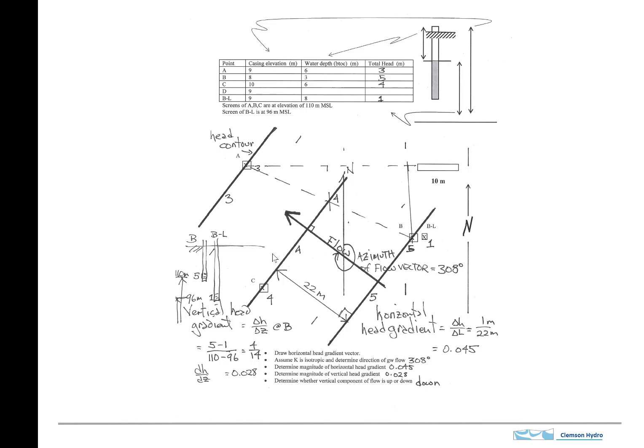This is the contour, the 4 contour, 5 contour, 3 contour. The flow direction goes from the high head here, 5, to the lower head.